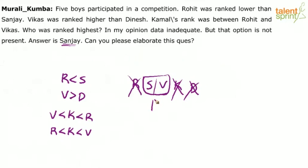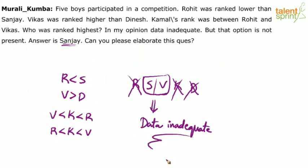Either Sanjay or Vikas — or we can say data is not sufficient for us to mark the answer. This has already been discussed in earlier sessions. Nikla also says the answer should be Sanjay, but it cannot be Sanjay — it need not be Sanjay.